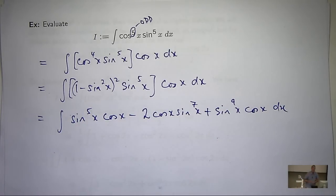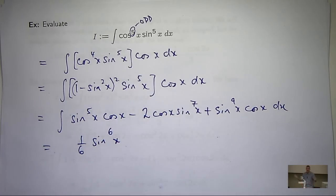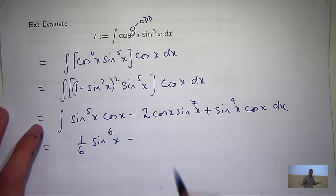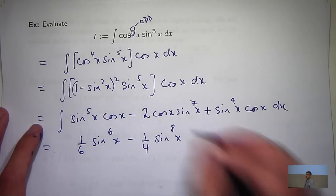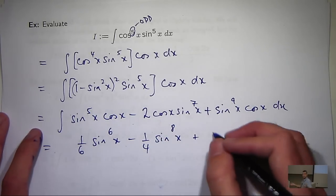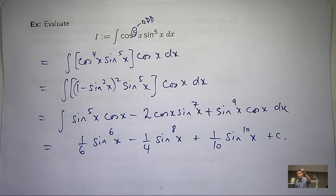So the first one's going to be something like 1 sixth sine x to the power 6. The second one, it's going to be minus 1 quarter sine x to the power 8. And over here, we're going to get something like this. You can see how important knowing the integral of sine x times the power of cos x.